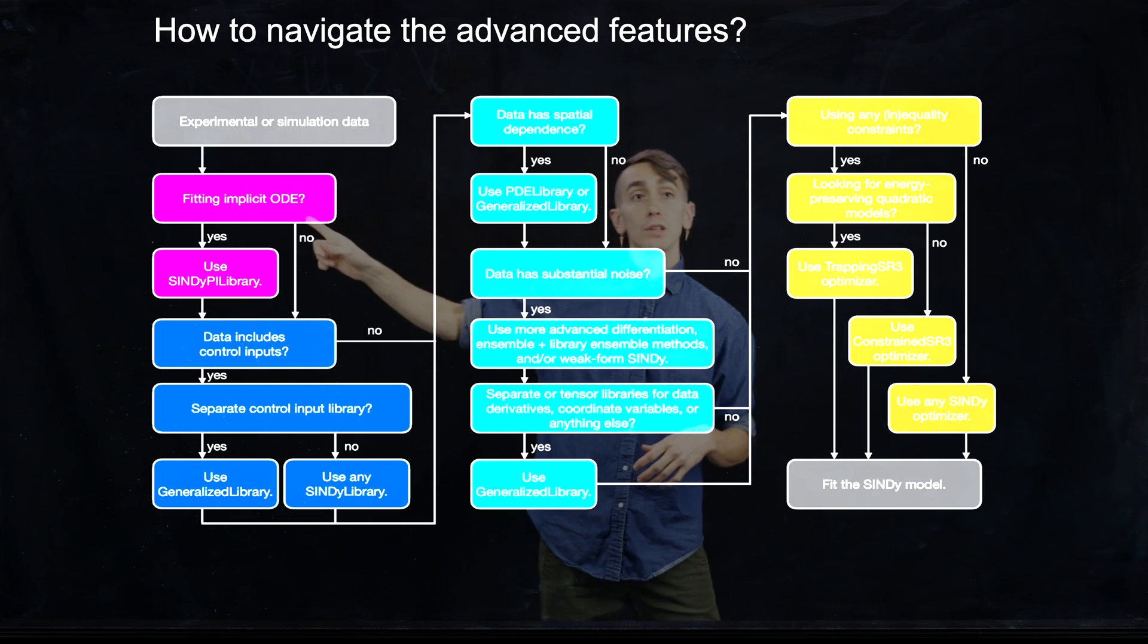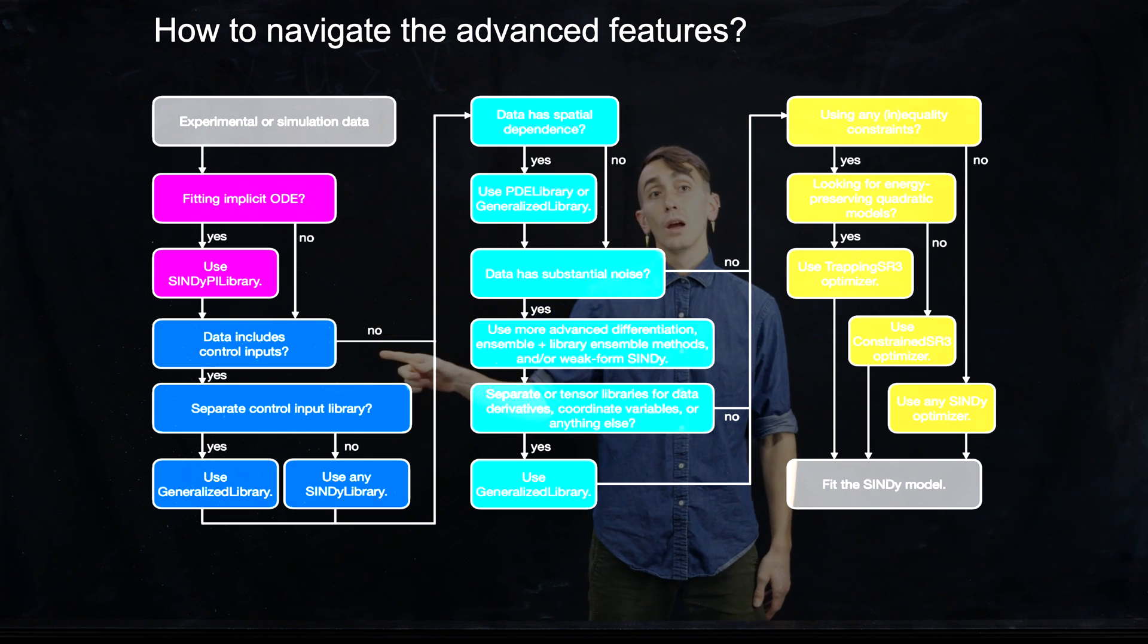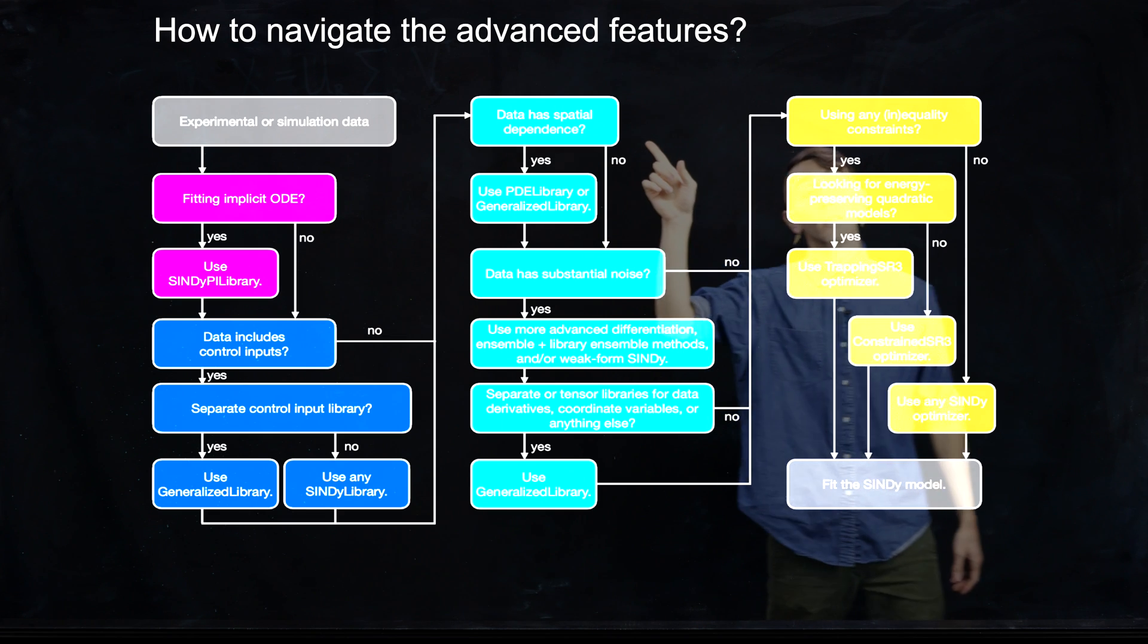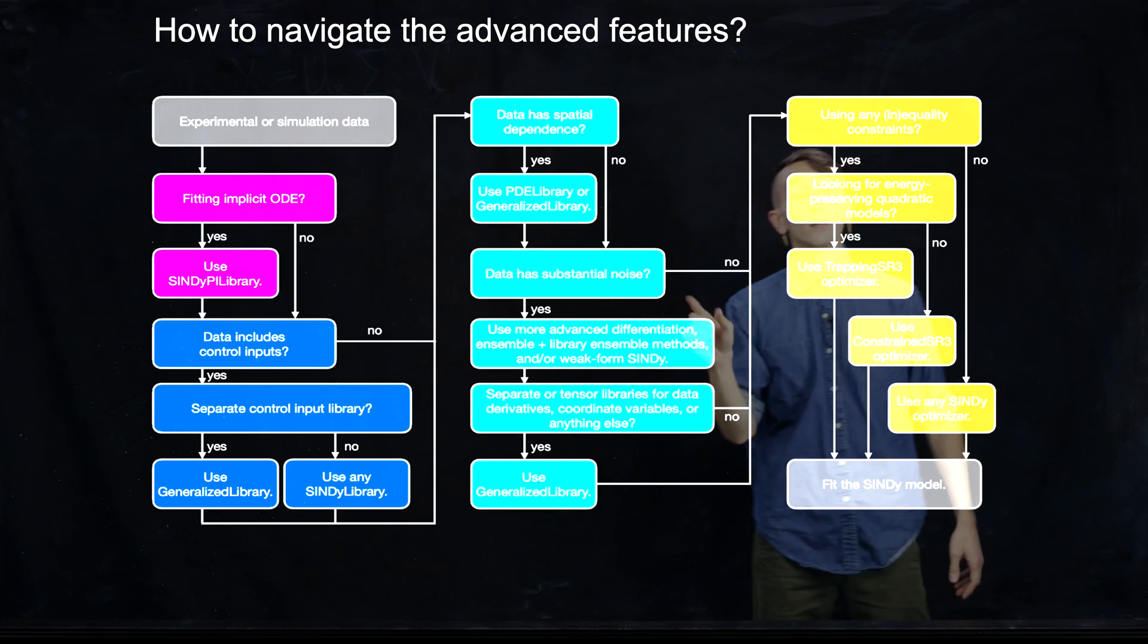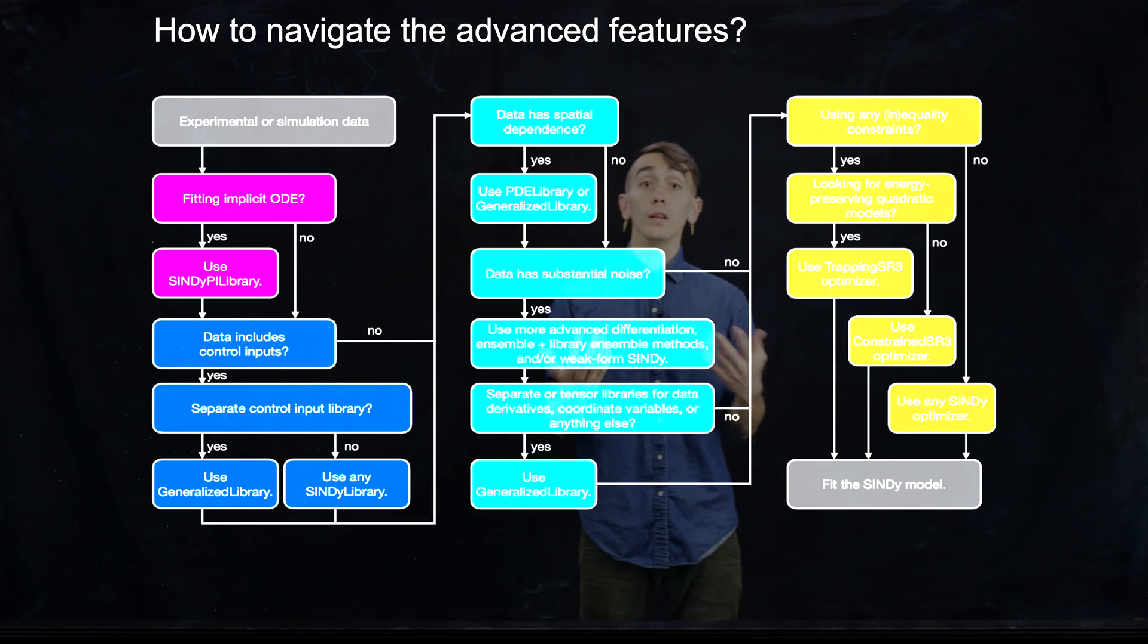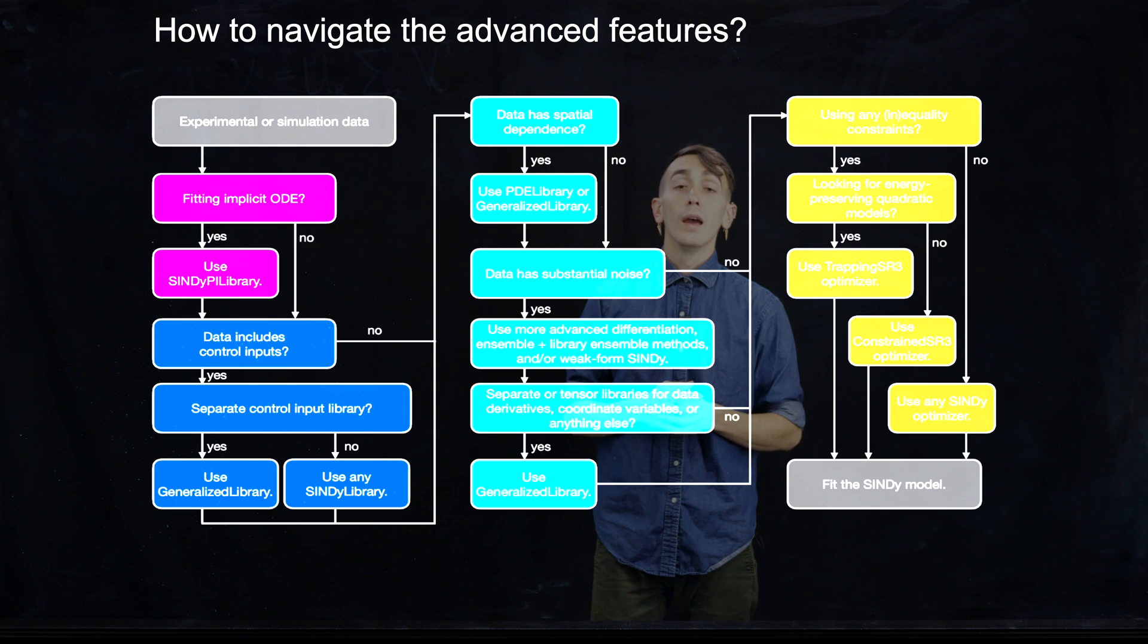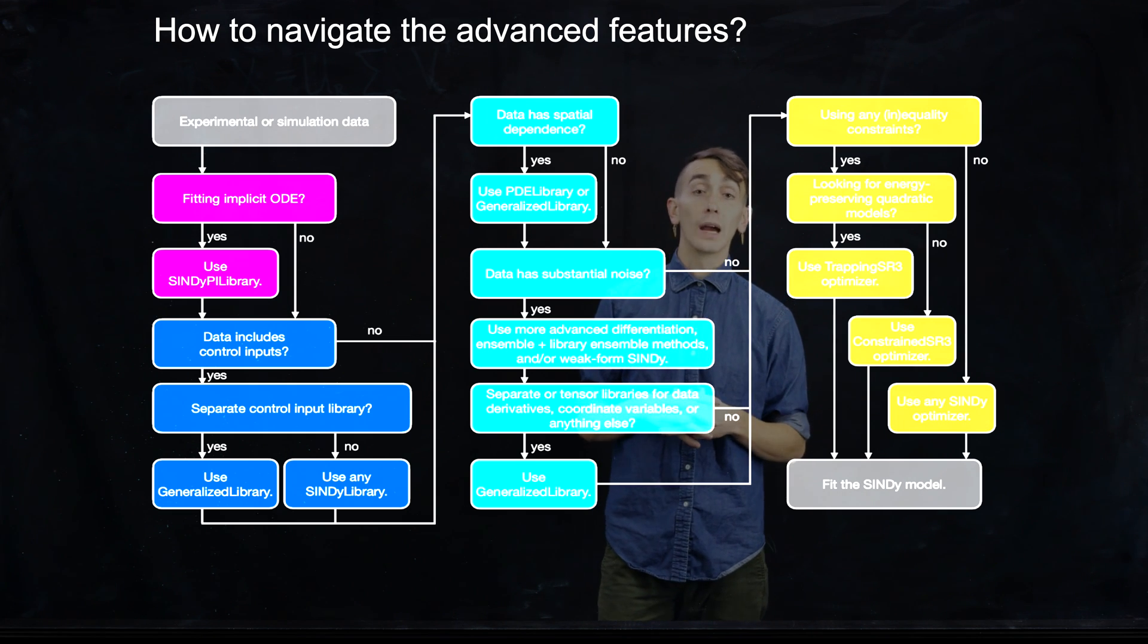telling you about the sorts of decisions you would use to decide what advanced functionality to use. And the primary questions to ask were, are you fitting an implicit system of ODEs? Does your data include control inputs? Does the data have spatial dependence? Does the data have substantial noise? And are you building in any physical priors with equality or inequality constraints? And with those questions, you can navigate all the advanced functionality that we have in PySINDy and really provide a robust system identification method for your data.